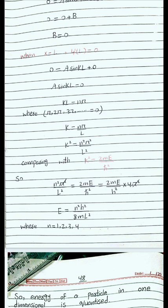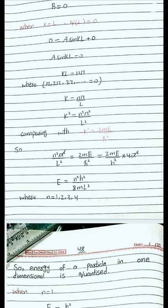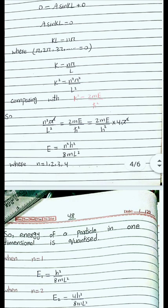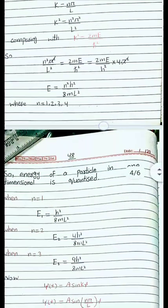Comparing k² = n²π²/L² with k² = 8π²mE/h², and noting that ℏ = h/2π so h² = 4π²ℏ², we simplify and solve for E, getting: E = n²h²/(8mL²), where n = 1, 2, 3, 4... This shows that the energy is quantized.